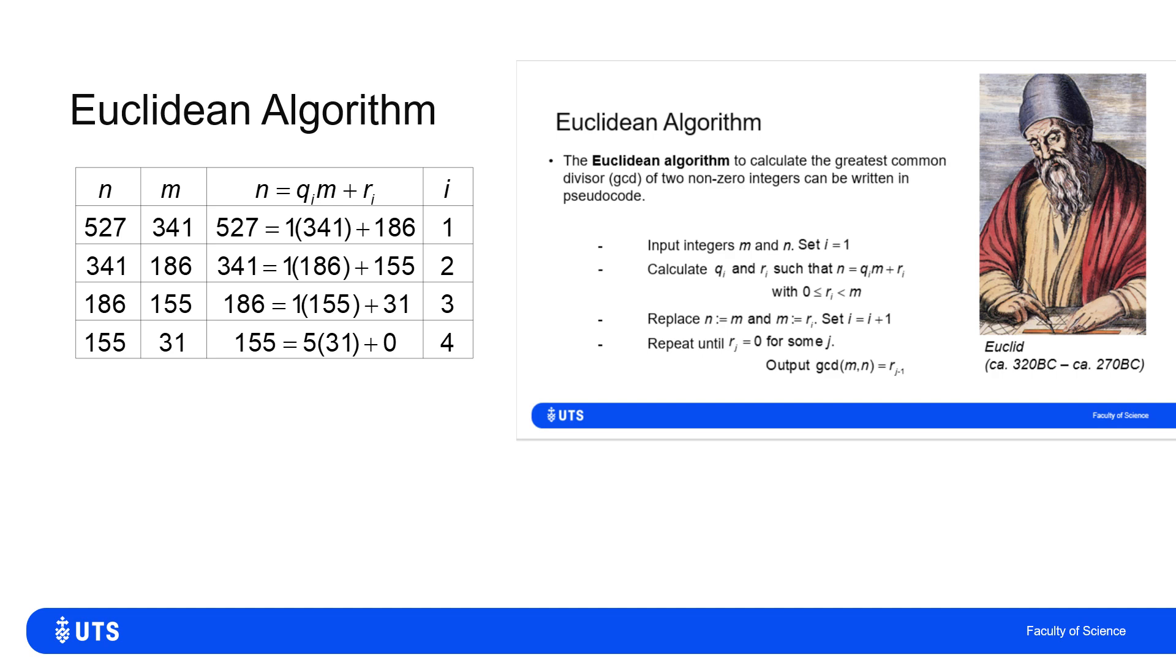When I work that out, 186 is 1 lot of 155 with a remainder of 31.